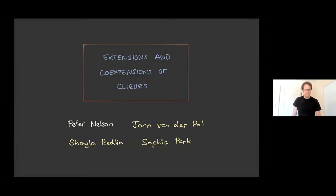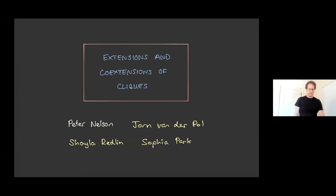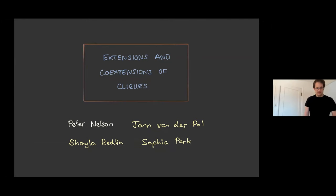As the title says, this is a talk that's kind of split into two different topics, but they both share a common theme of dealing with matroids that are very close to being complete graphic matroids. So extensions and co-extensions of matroids that just come from complete graphs. There are a few different projects that have gone into what I'll be talking about — with Jorn, who is my postdoc, Shayla, who's my PhD student, and Sophia, who used to be my master's student.